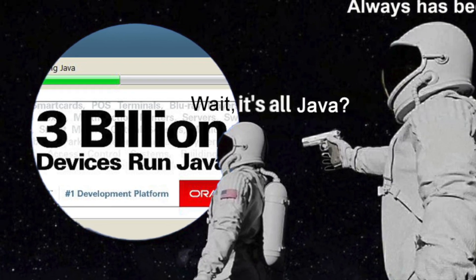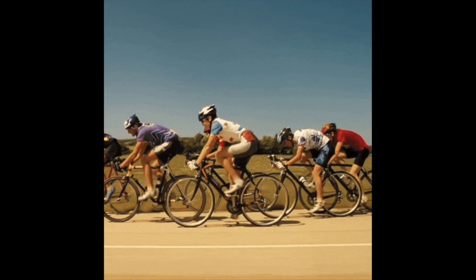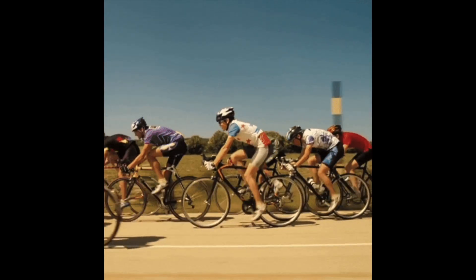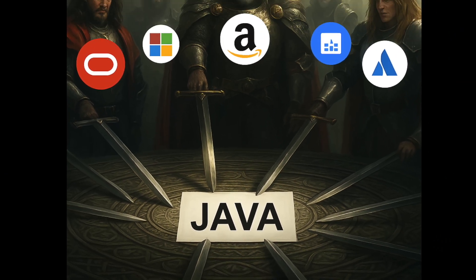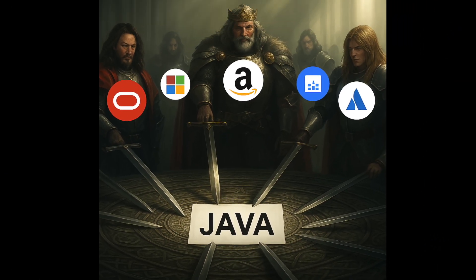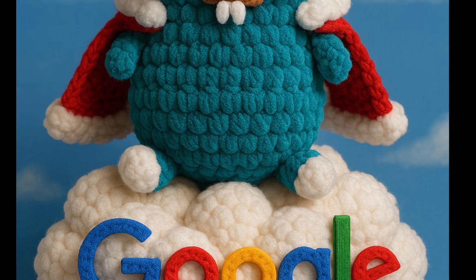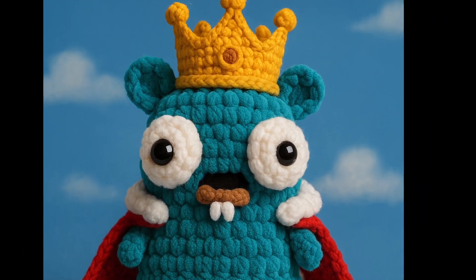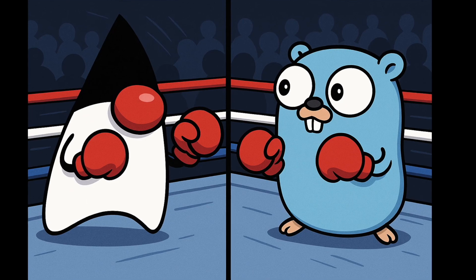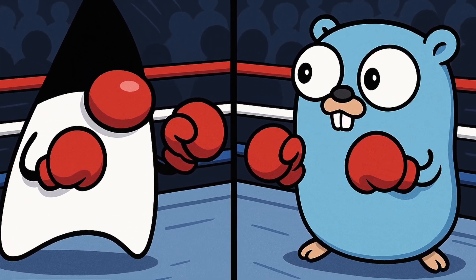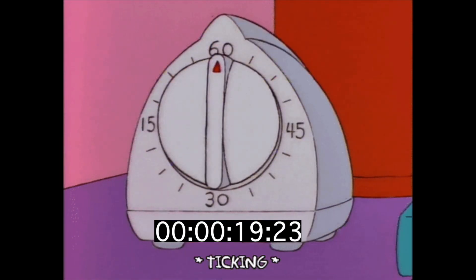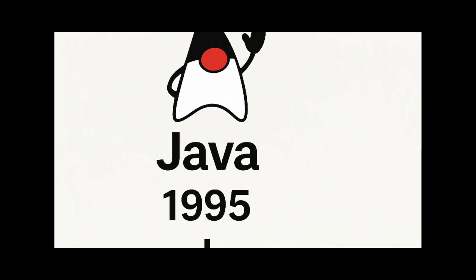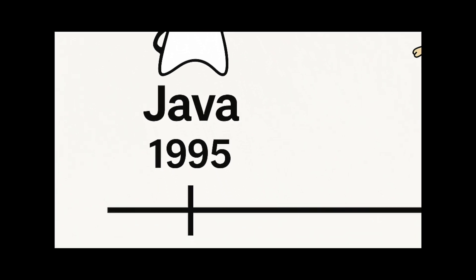Java powers 3 billion devices, but Go is eating its lunch in the cloud. One is the reliable veteran with decades of enterprise cred; the other is Google's speed demon built for the modern web. But which one should you actually use for your next backend? Let's find out in 240 seconds.